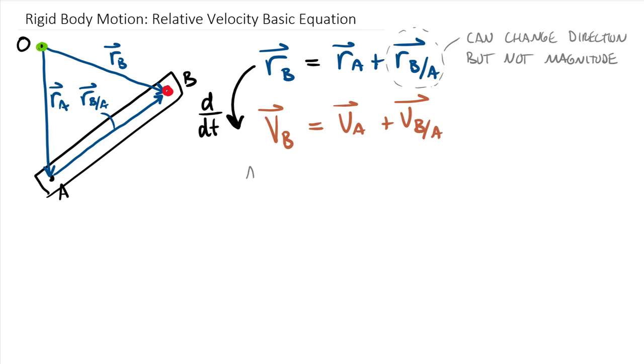So just go ahead and define these three different vectors, these three different velocities. We could call this the absolute velocity, velocity of point B. These are point velocities, not velocities of bodies. This is going to be the absolute velocity of point A. And then this last term here is going to be the velocity of point B relative to point A.